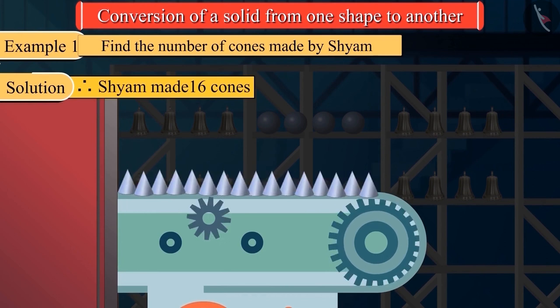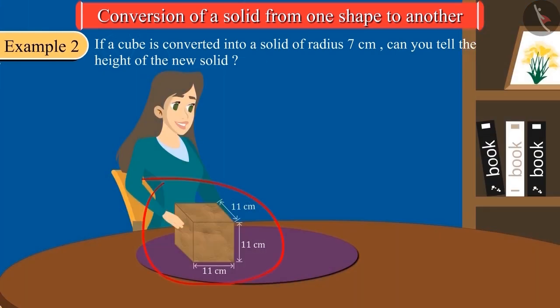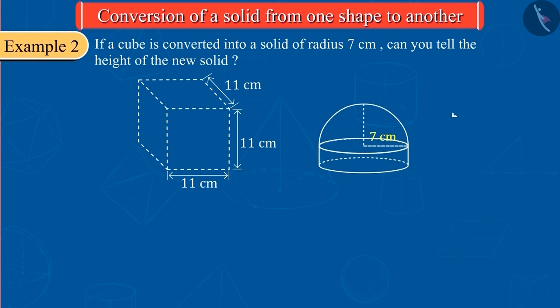Let's look at another example. This cube is made of model making clay. Sanjana transformed this solid into another solid with a radius of 7 cm. Can you calculate the height of this solid?